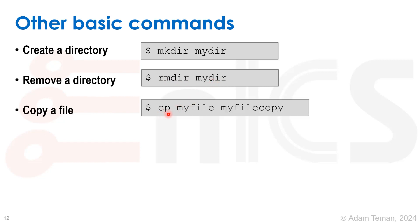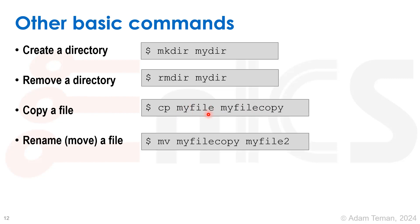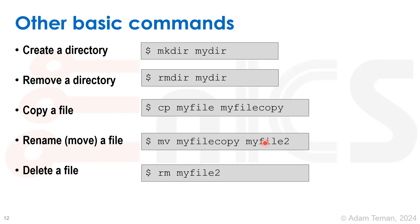To copy a file, the cp command copies a file. So 'cp myfile myfile_copy' creates a new file called myfile_copy which is an exact copy. I can move a file with mv — for example, 'mv myfile_copy myfile2' renames it. If I had put a different directory name, it would have moved the file. And to delete a file, I just do 'rm myfile2', which removes it.